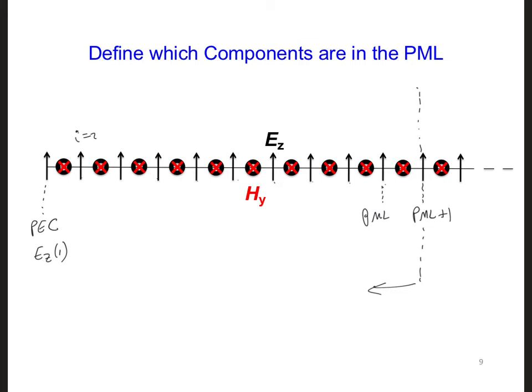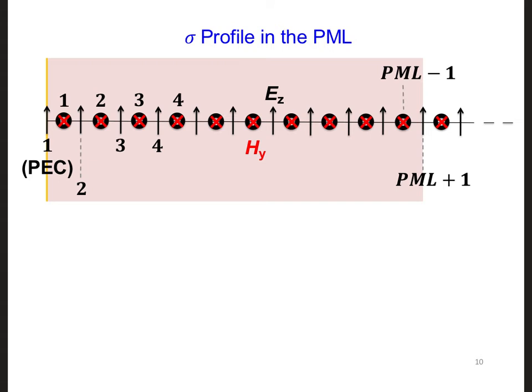It's often a good idea to draw a diagram of the grid components and label the indices so we can clearly see which field components should be assigned to the PML. Now we want the smallest sigma value to be at PML plus 1. So we should change the numerator so that when i is equal to PML plus 1, the numerator has the smallest value. So now I'm going to write sigma i. I have PML plus 1 minus i all over the thickness.